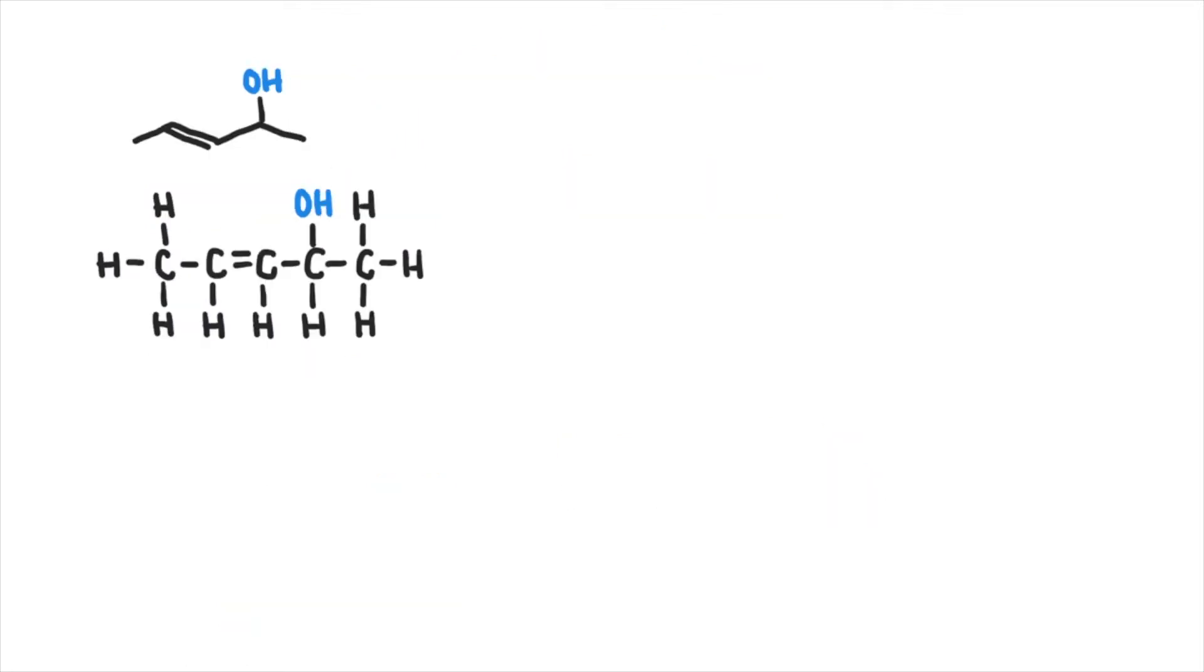How about this one? Once again, identify the longest carbon chain which will be pent. Now there are rules for naming the functional groups and in this case, hydroxyl has priority so it must be given the lowest possible number for its location. So we number it from right to left: 3-pentene-2-ol. Notice I didn't drop the letter E as it's already separated by a dash. It could also be called pent-3-en-2-ol.